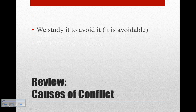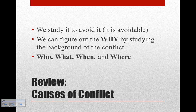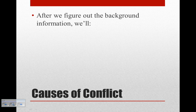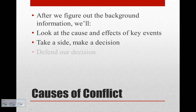To review: we study conflict in order to avoid it. We study the causes so that we can avoid conflict, because it is avoidable. We can figure out the why, or the cause, by studying the background — meaning the who, what, when, and where. Moving forward, we will look at the cause and effects of key events that led to the conflict. We'll also take a side and make a decision about what we think the major causes of the conflict were, and then defend that decision based on facts that we've researched.